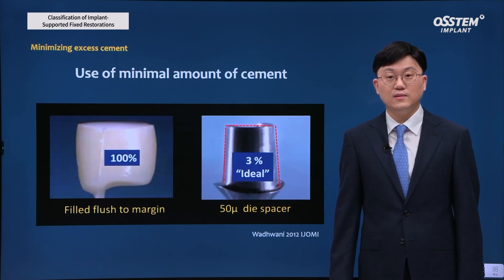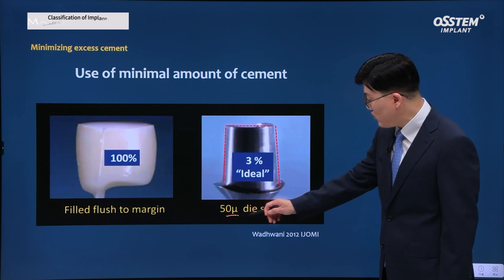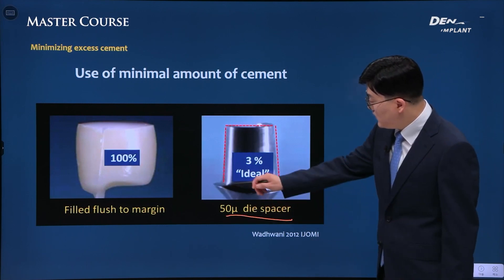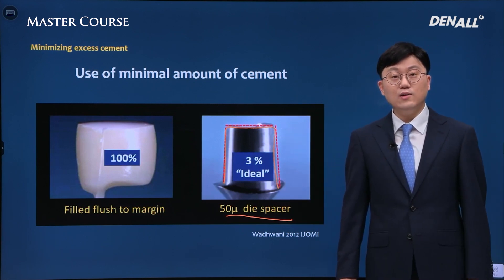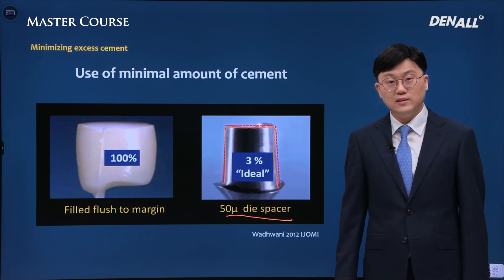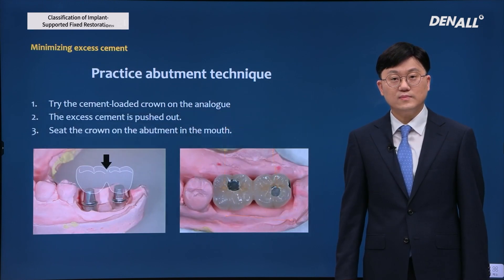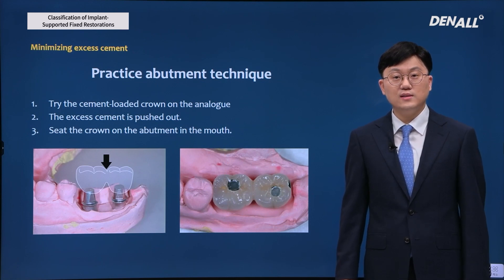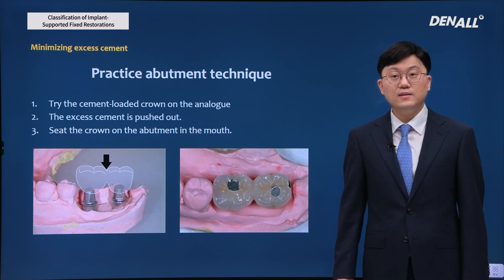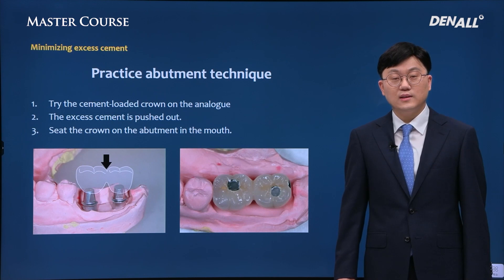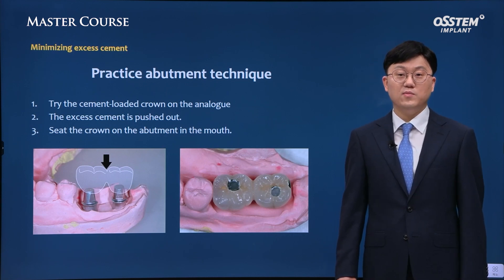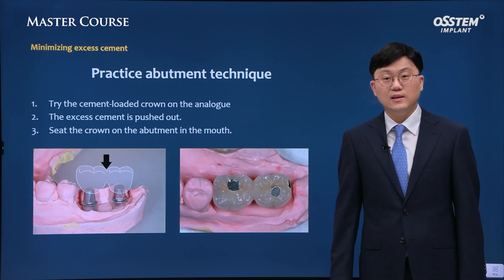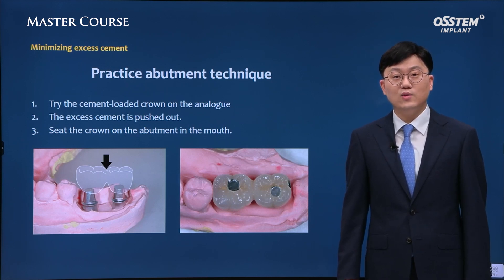Minimizing the amount of cement can also be a good option. Using a 50 micron dye spacer as a standard, the ideal amount of cement would be about 3% of the inner surface volume. When applying cement inside the crown, rather than just filling it in, think of it as applying a thin layer of cement. Next, we can utilize the practice abutment technique, where the crown with cement is placed on the abutment analog and excess cement is removed first. After that, the crown is set on the abutment in the oral cavity. This is a good method, but it requires a stock abutment and abutment analog, which is a downside.